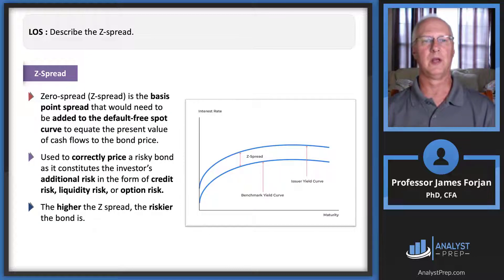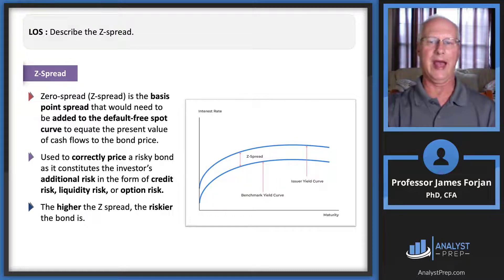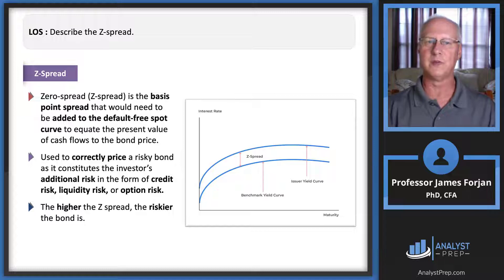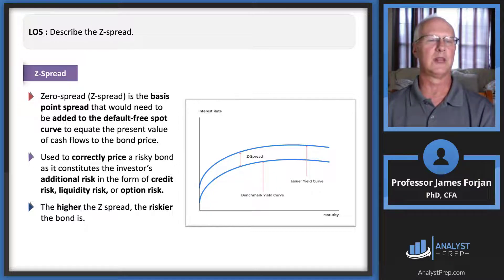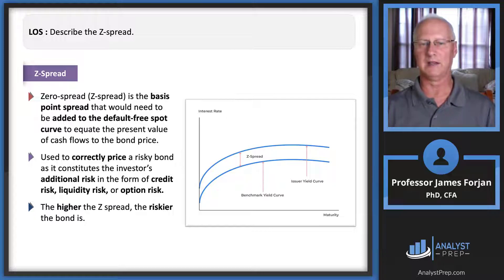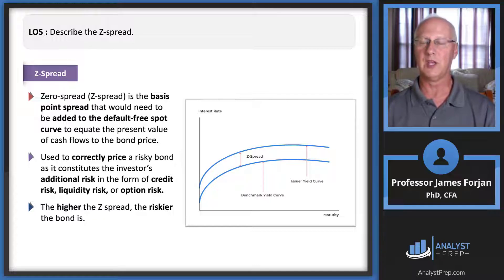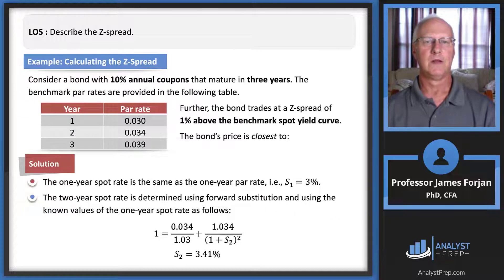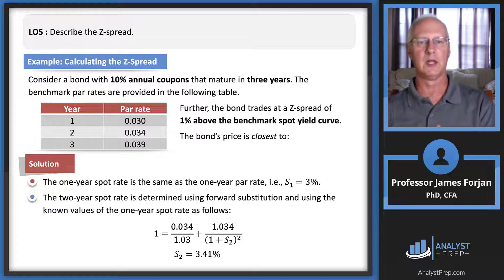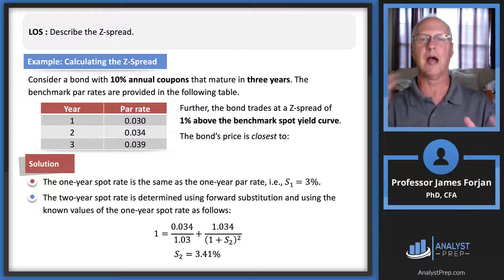There are other spreads to consider. The Z-spread — or zero spread — is the yield added on top of the default-free spot curve to force the present value of those cash flows to equal the actual price of a bond. It is used to correctly price a risky bond, and it reflects credit risk, liquidity risk, and option risk. The higher the Z-spread, the riskier the bond. Working through a Z-spread calculation: par rates of 3%, 3.4%, and 3.9%; with a Z-spread of 1%, bootstrapping gives implied spot rates of 3%, 3.41%, and 3.93%.